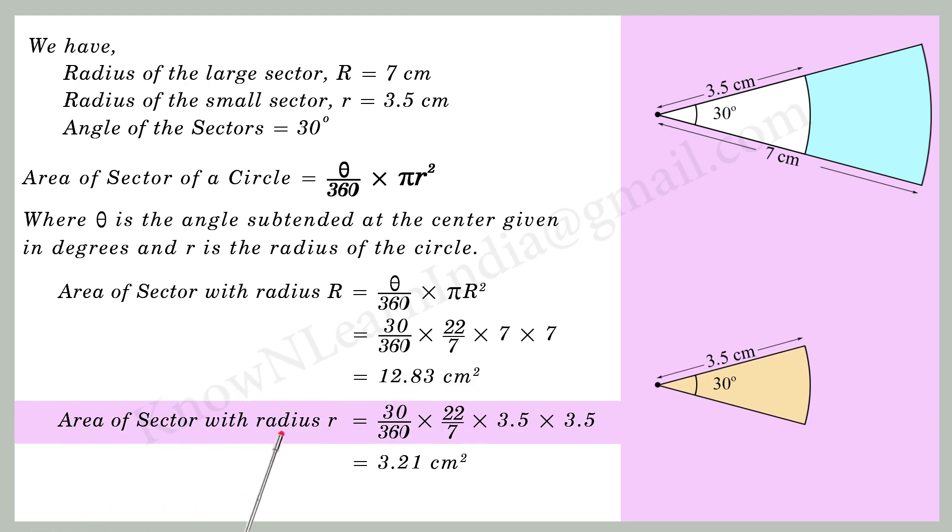Area of the sector with radius small r is equal to 30 by 360 into 22 by 7 into 3.5 into 3.5 is equal to 3.21 cm square.